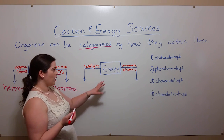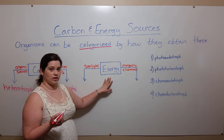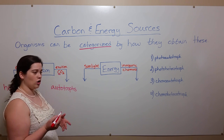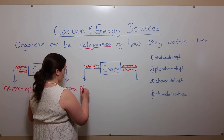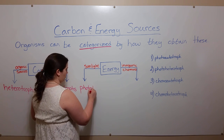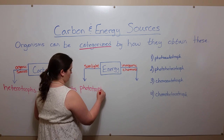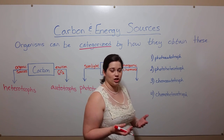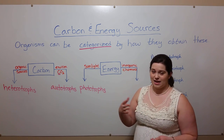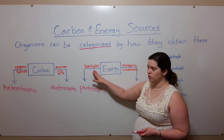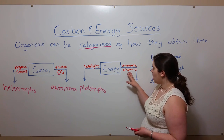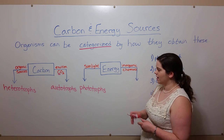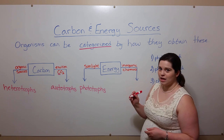Organisms can also be categorized based on their energy sources. For example, those organisms that get their energy from sunlight are called phototrophs. And of course there are many organisms that can't directly generate energy from sunlight, and those organisms instead oxidize various inorganic chemicals to obtain their energy — these are called chemotrophs.